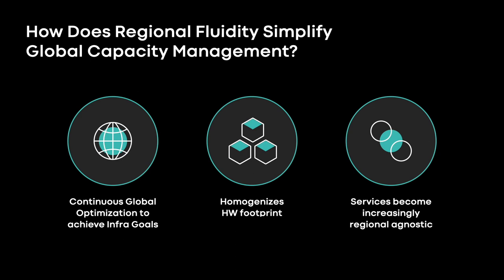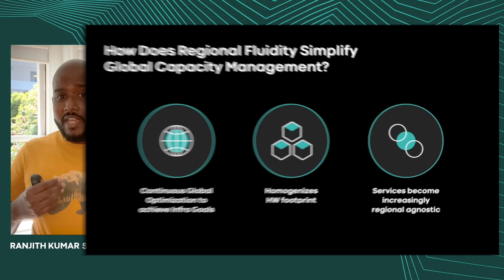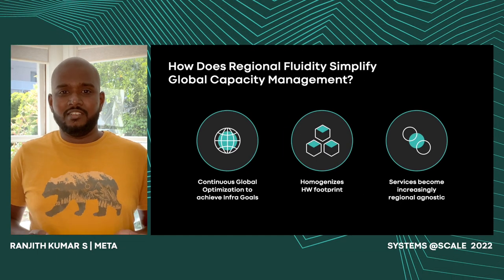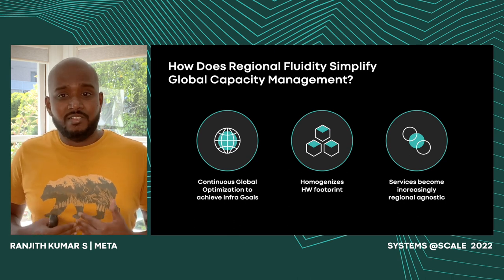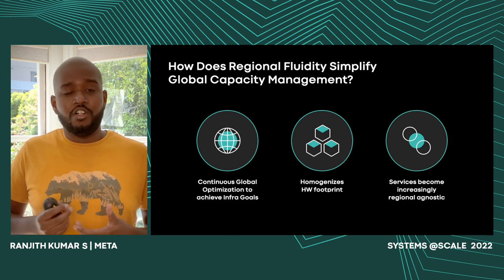So what does this enable toward global capacity management? Firstly, we are able to optimize globally, trading local inefficiencies for a better global outcome — going back to the world as a data center concept. This homogenizes the hardware footprint across a few standard set of region types like compute, storage, and so on. It also improves our ability to safely place and redistribute services, making them more and more region agnostic. These are the essential qualities we are trying to enable for global capacity management.